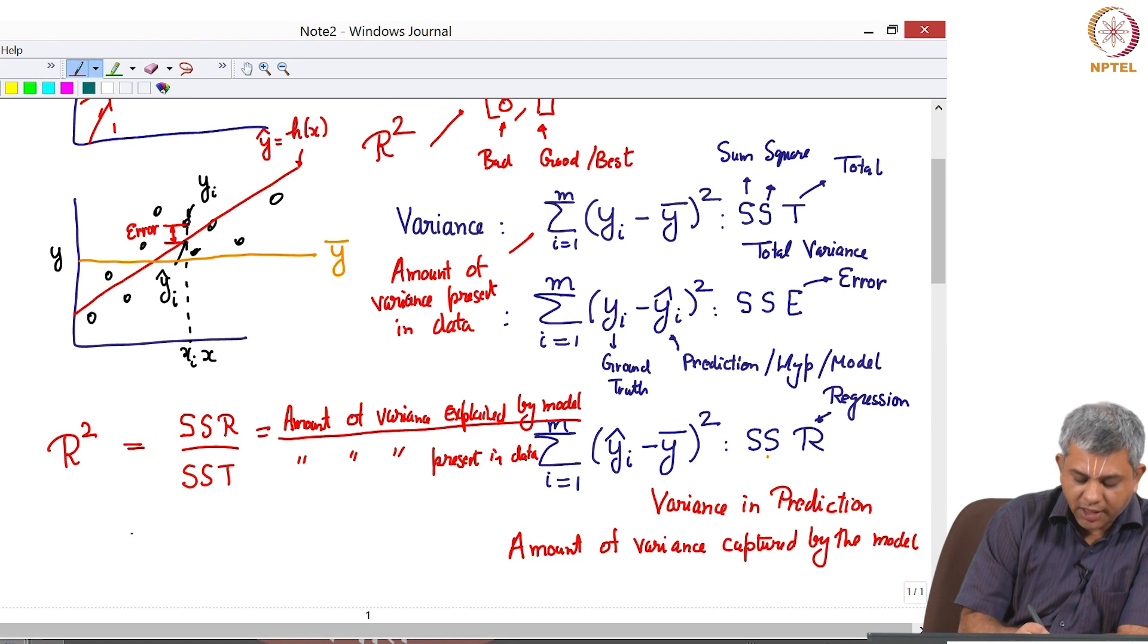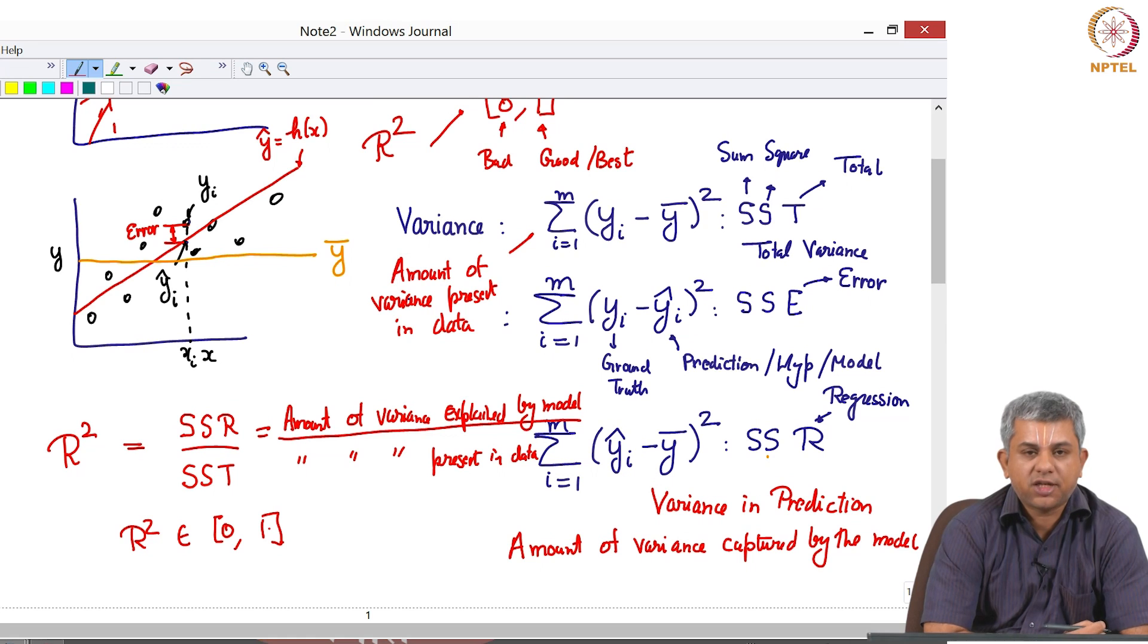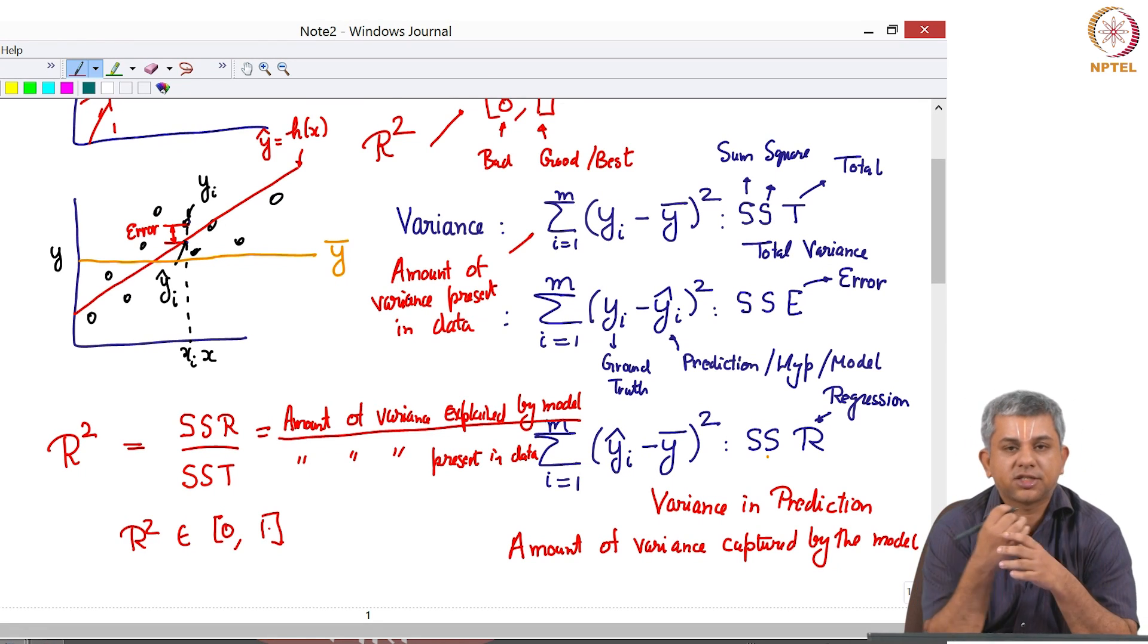And it can be shown that R square will always be between 0 and 1. In the best case scenario your model actually predicts all the variance which is actually present in the data, and in that case it will be equal to 1.